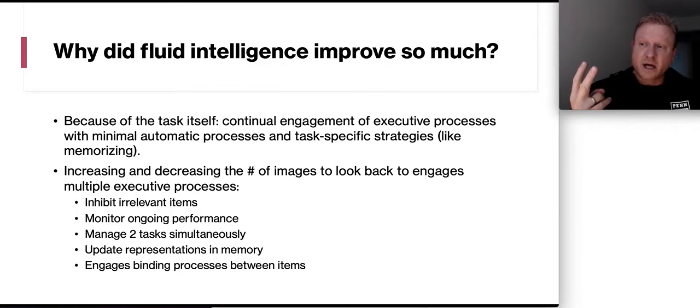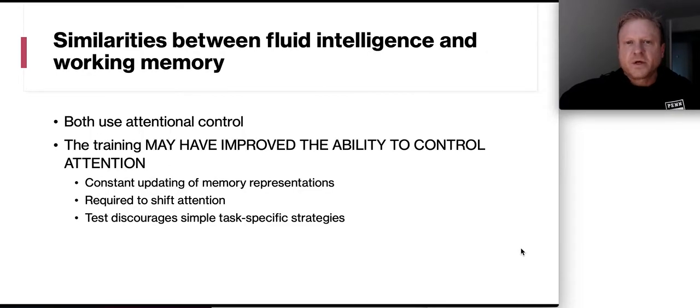You had to manage two tasks simultaneously. What you're looking at? Where's that little white square? And what am I hearing? Which letter? Does this match? You're having to constantly update those representations in memory. And then you're having to engage binding processes between items. So the similarities between fluid intelligence and working memory, both of them are using attentional control. Now the training may have improved the ability to control attention. This is really important. Constant updating of memory representations were going on. You had to shift your attention when you got a new three-second item to look at. And the test also discouraged simple task-specific strategies because you kept getting different stuff to look at.